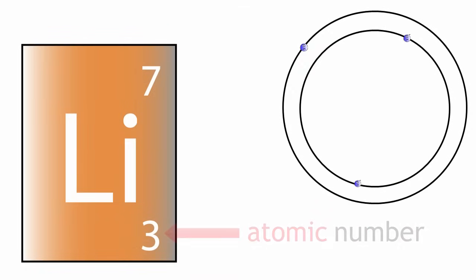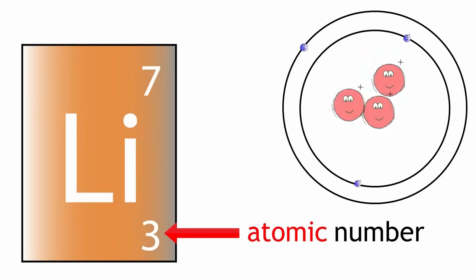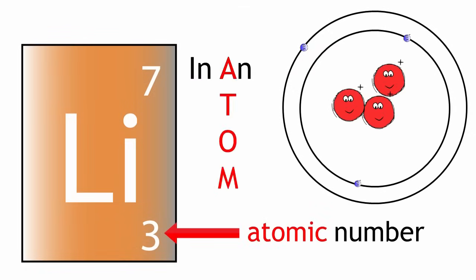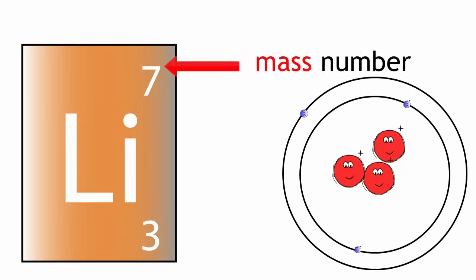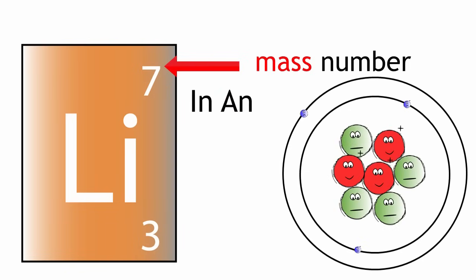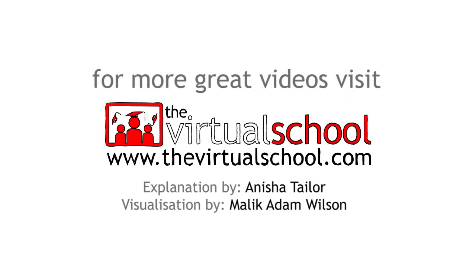So the atomic number is the number of protons in an atom, and the mass number is the number of protons and neutrons in an atom.